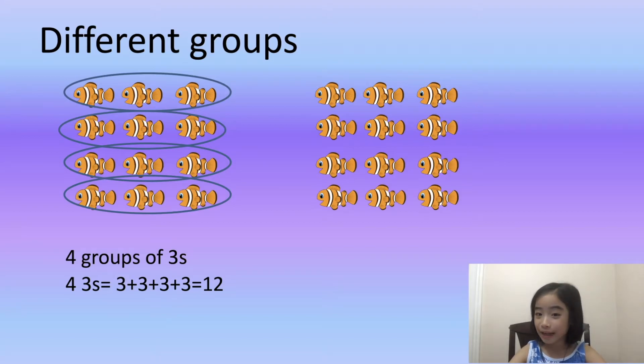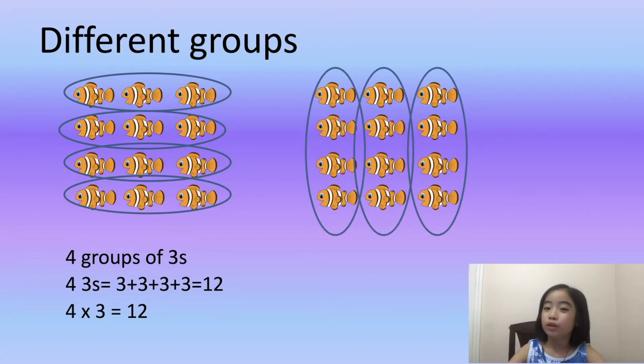Another way is I still have twelve fishes and I can split them into three groups, each with four fishes. Three groups of fours, which equals four plus four plus four equals twelve.